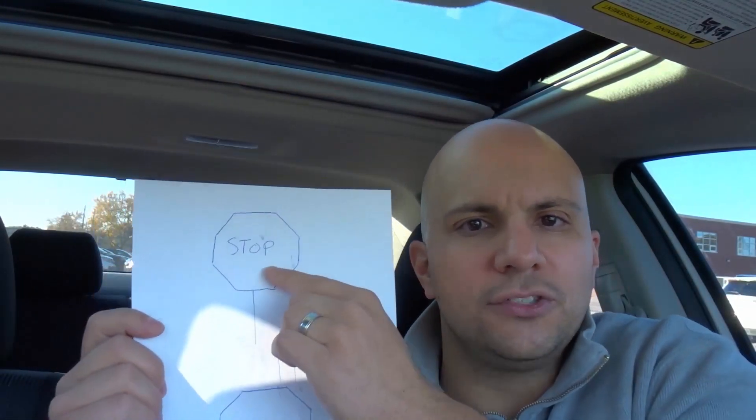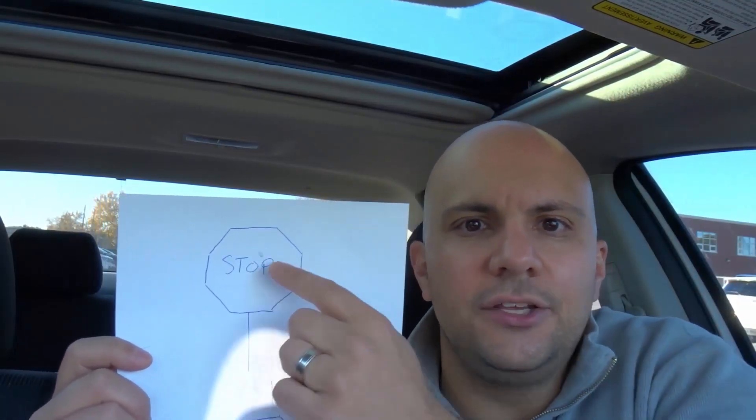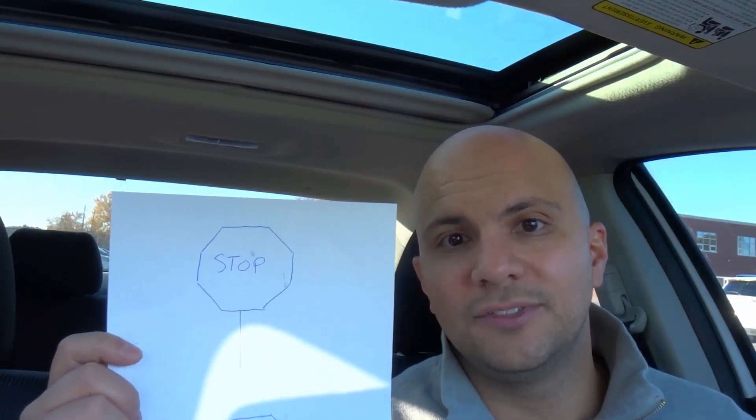And sometimes it might say three-way on it. Other times it might just show a stop sign. Because it's not going to let you know that three of the four have stop signs. It just lets you know someone else doesn't have a stop sign. That's it. Now, those are the different types of stop signs.